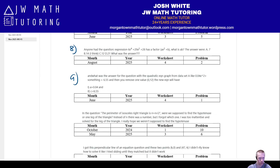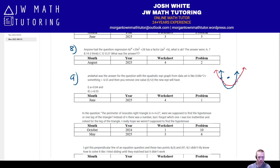Question nine involves a quadratic equation on a graph. They give you the model equation based on various points, but there's a random outlier point included in calculating the model. If you look at the graph, it probably would look more like a cleaner curve without that outlier. The question asks what happens if you remove that outlier value. Check out June 2025, worksheet four, problem one.